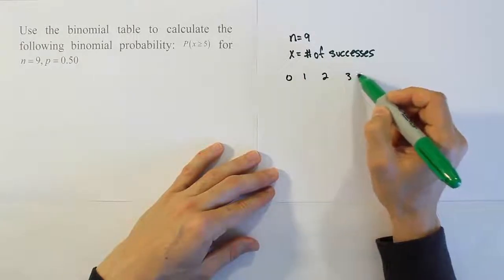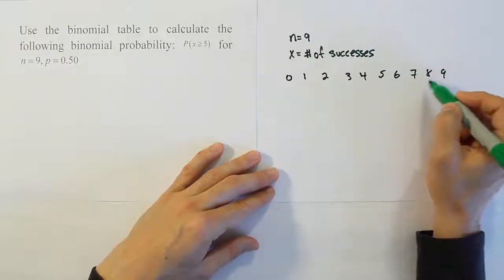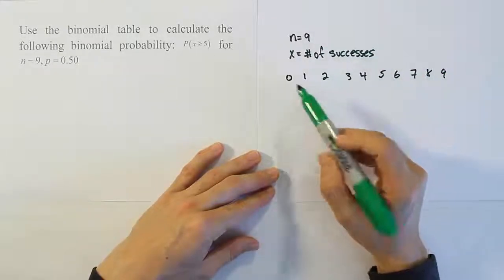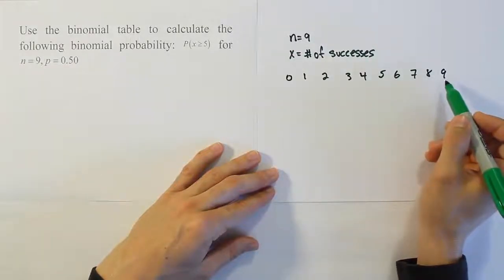3, 4, 5, 6, 7, 8, or all 9 of them be successful. You could have none of them be successful, just one of them be successful, all the way up to 9 of them being successful.